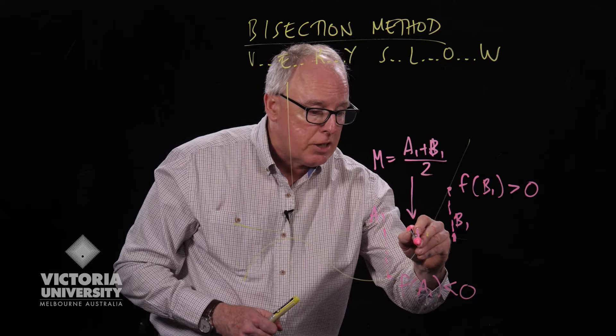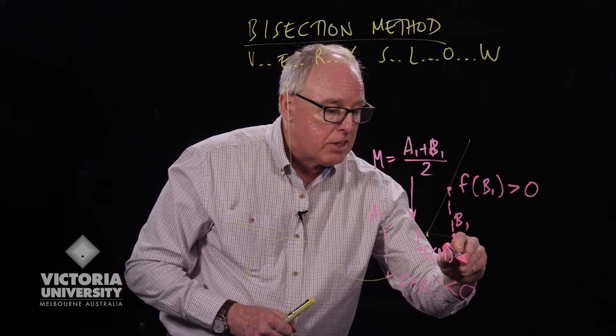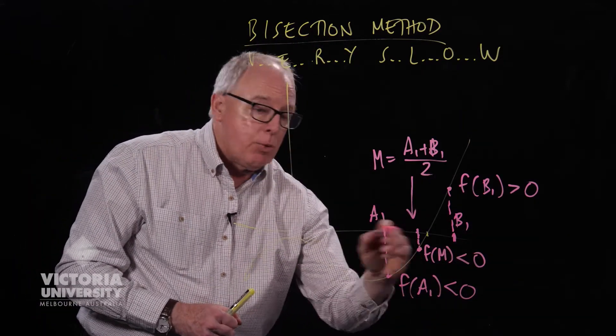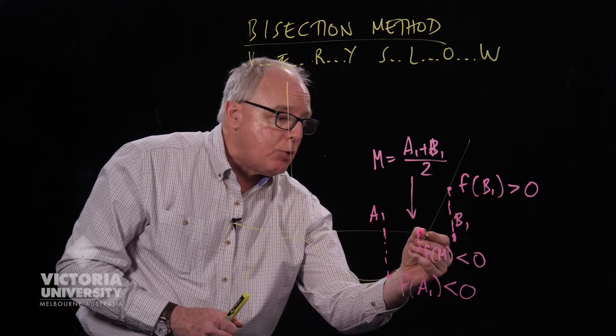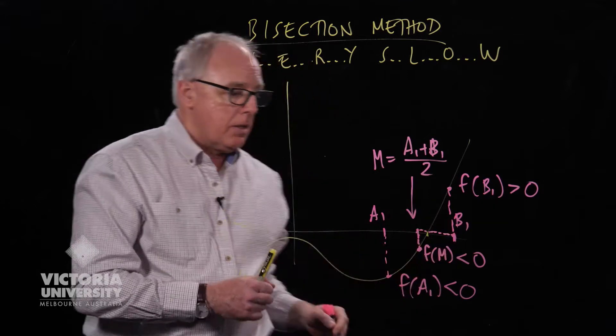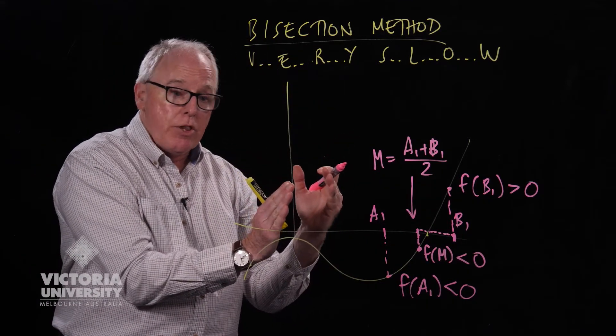In this case, the way I've drawn it, it looks like f of m, the function value, is less than zero. Which means now we know that the function value, wherever it is, must lie between m and b1. So we've halved the area in which we know the root can be found.